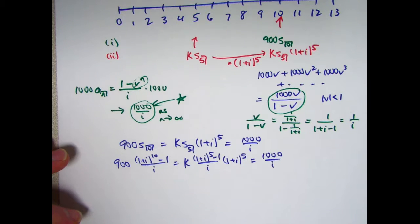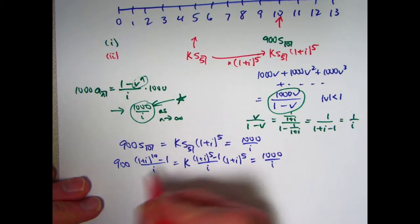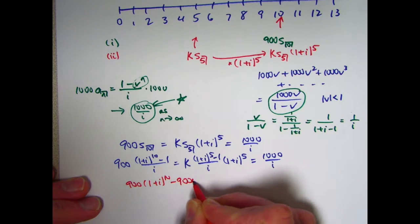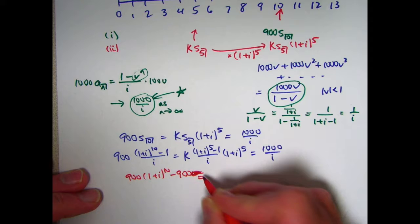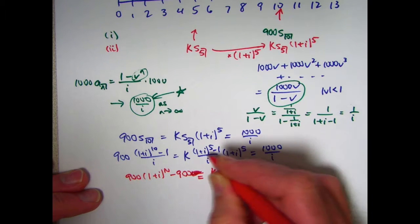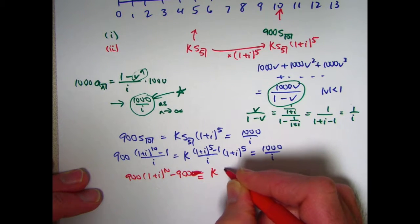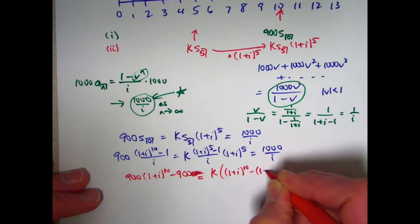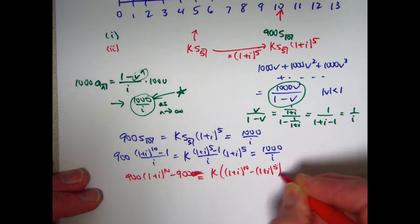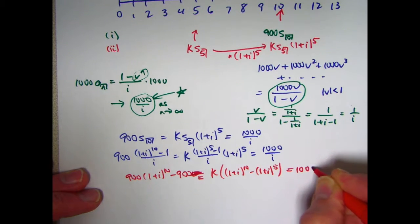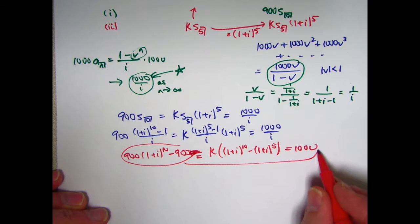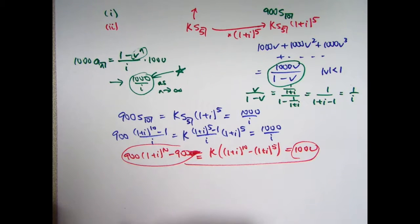This can be simplified a bit by multiplying everything by i and expanding everything out. We'll get 900 one plus i to the 10th minus 900 equals k times, multiply the one plus i to the fifth through. Actually, I think I'll keep the k out because we've got to solve for k. And this equals 1000.